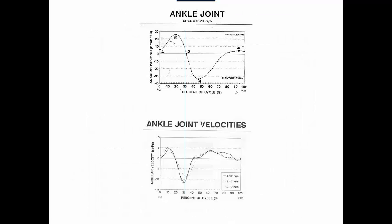We can look at everything lined up. Zero velocity occurs at around 20%, which is point 2 where we change directions, then at 45% where we change directions again, and then again at point 5.